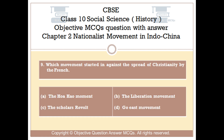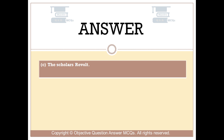Question number 9: Which movement started against the spread of Christianity by the French? Option A: The Hoa Hau Movement. Option B: The Liberation Movement. Option C: The Scholars Revolt. Option D: Go East Movement. The right answer is Option C: The Scholars Revolt.